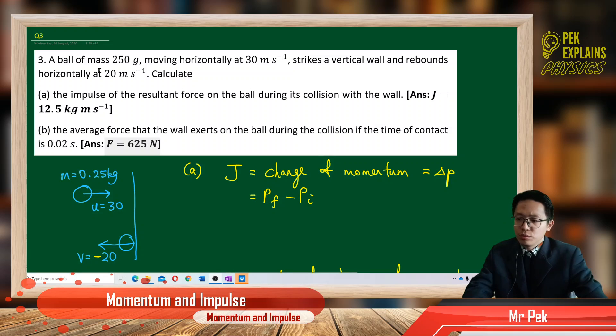A ball of mass 250 gram moving horizontally at 30 meter per second strikes a vertical wall and rebounds horizontally at 20 meter per second. Calculate the impulse of the resultant force on the ball during its collision with the wall.